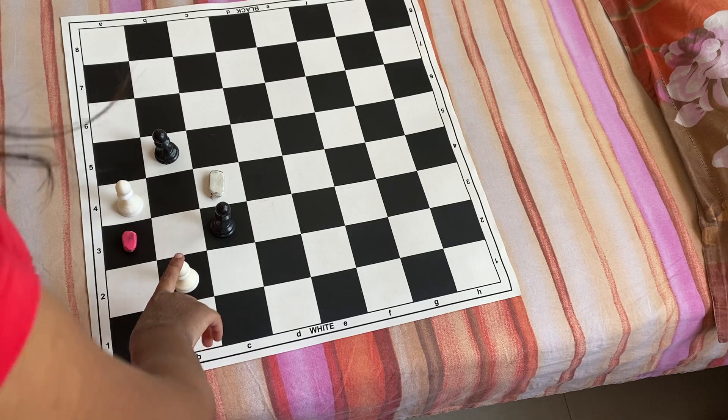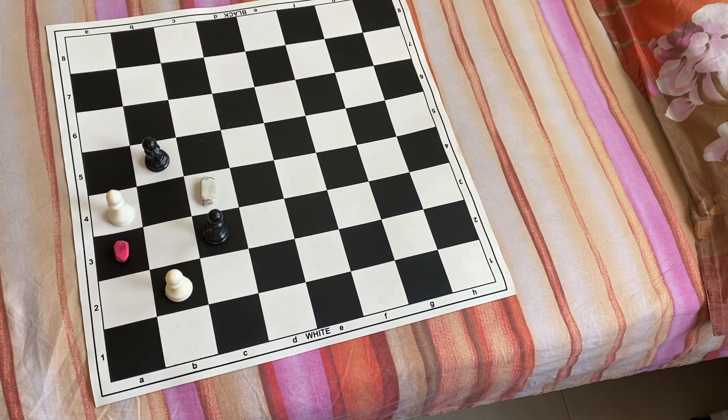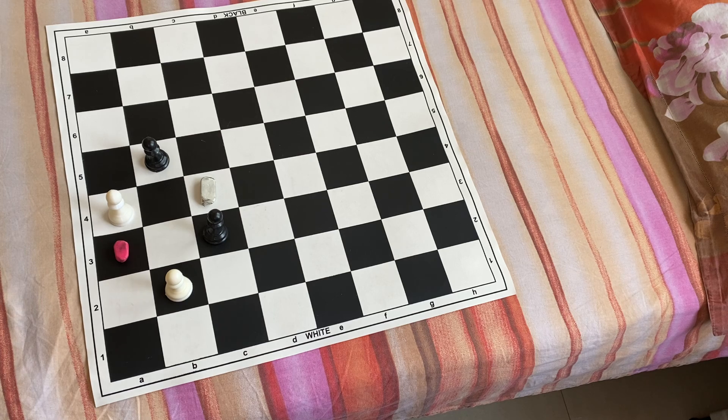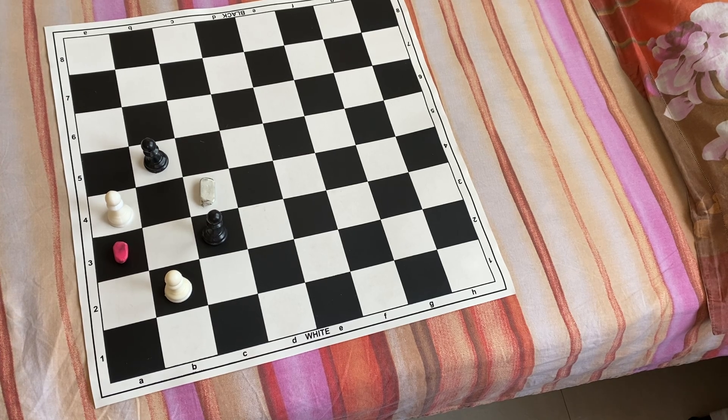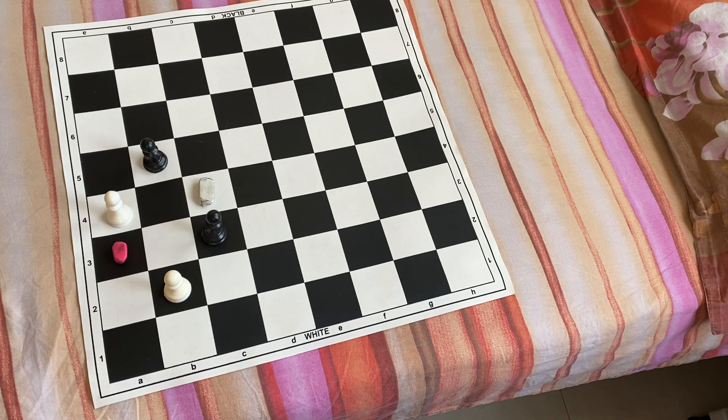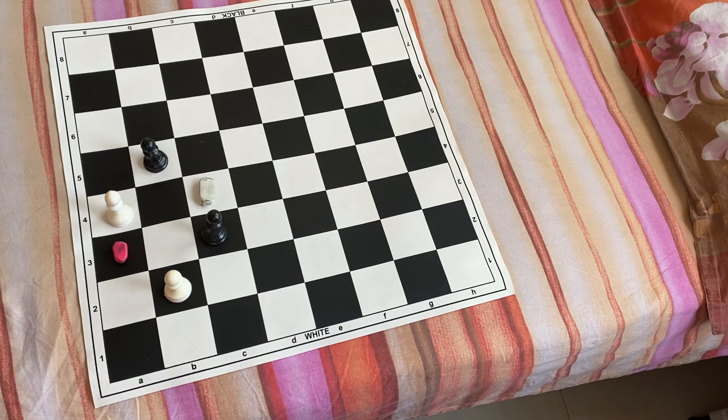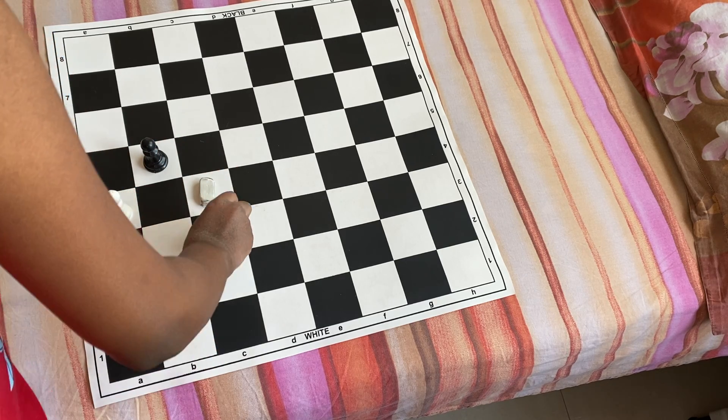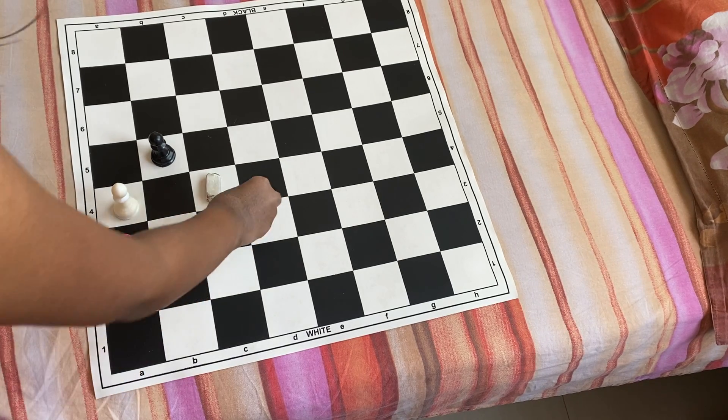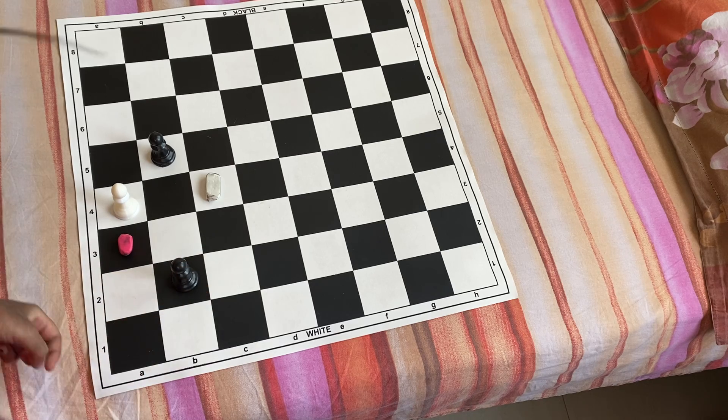So now, tell me if this pawn can kill this pawn. If it's yes, then please put it in the comments box below. And if it's no, then put no in the comments box below. Same thing goes with this. So yes, it can kill. If it was white's chance, white would kill this. And if it was black's chance, the black would kill this.